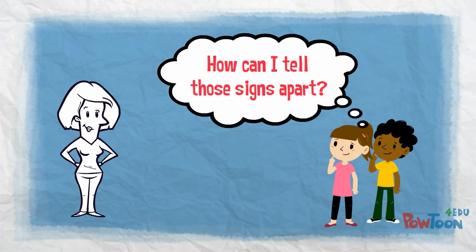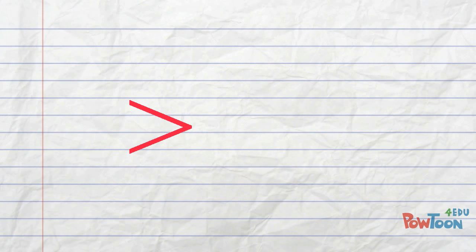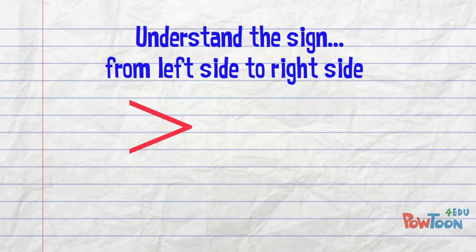I'll explain the sign and you're going to get it very quickly. We understand the sign from left side to right side, like reading a word on a page. On the left, I see 2 points.